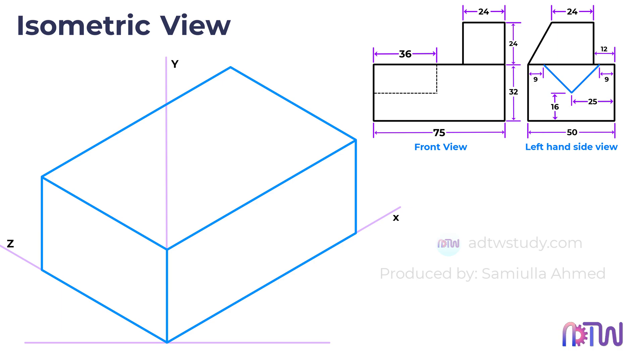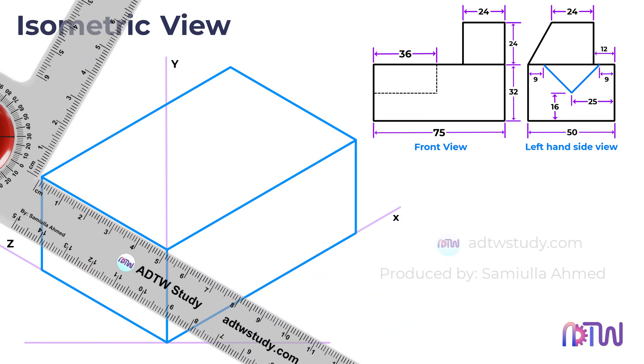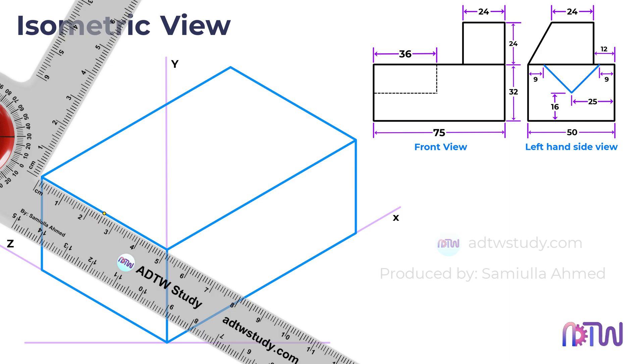To replicate this V-shaped groove, we will begin by dividing the side length into two equal parts, since the groove aligns perfectly with the middle of the side view. After this division, mark two points at a distance of 9mm from the corners on each side.